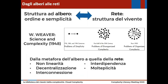Nel 1900, Warren Weaver in Science and Complexity scrive che nel tempo possiamo individuare tre fasi del pensiero scientifico. Nel XVII, XVIII e XIX secolo: problemi di semplicità, ovvero ci concentriamo su due elementi e cerchiamo di capire il rapporto di causa-effetto. Arriviamo nella prima metà del XX secolo a occuparci di problemi di complessità disorganizzata: riconosciamo che la realtà è più complessa di quello che credevamo. Nella seconda metà del Novecento, ulteriore step, iniziamo a focalizzare l'attenzione su problemi di complessità organizzata: non solo abbiamo tanti elementi, ma cerchiamo di capire come sono collegati tra loro.